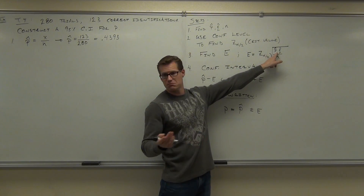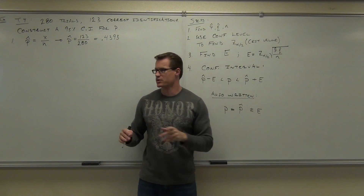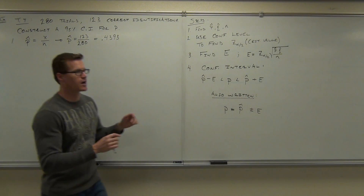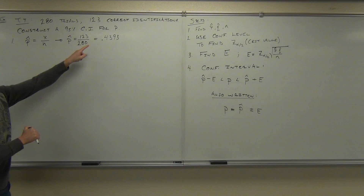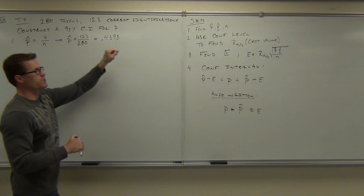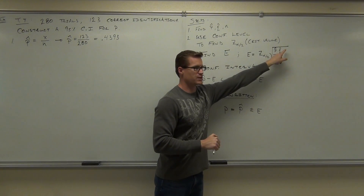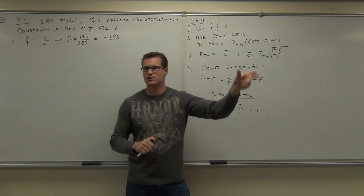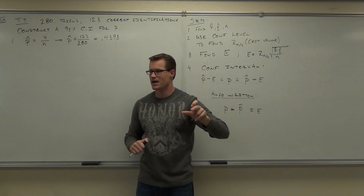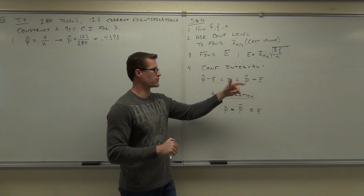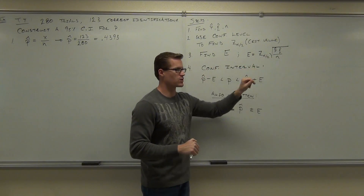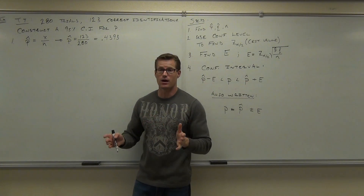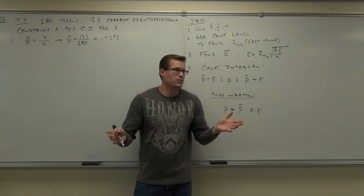Maybe, maybe not. But we want to be sure that we're not rounding too much. If you round too much — notice how if you round this to 0.44, you round your value a little bit differently, and then you multiply those things, that's going to round differently. Then you divide by N differently, square root differently, multiply by this critical value — way off. At that point you might be way off.